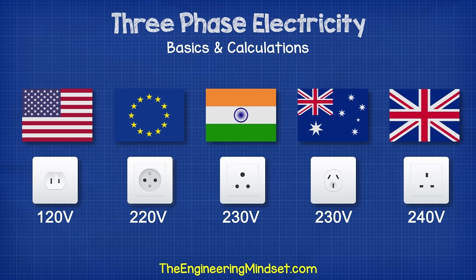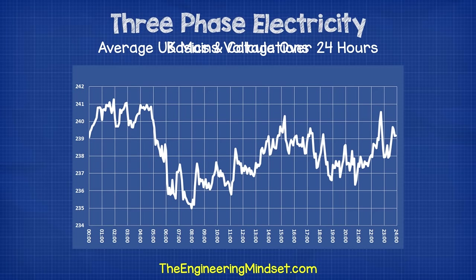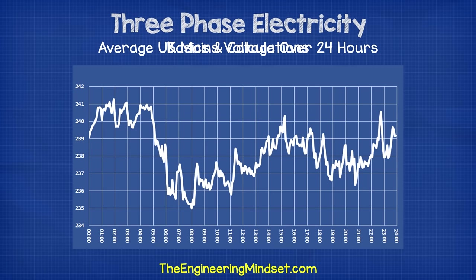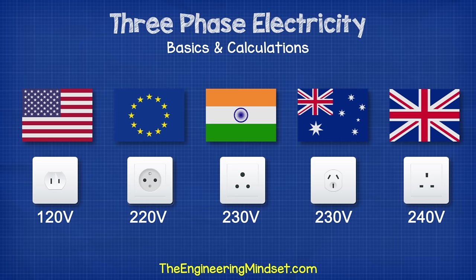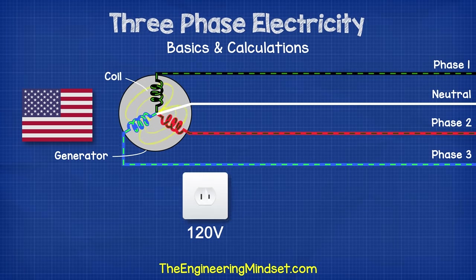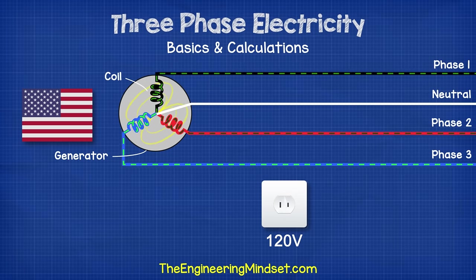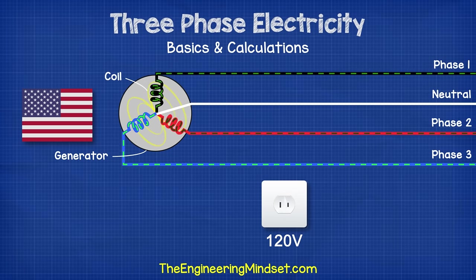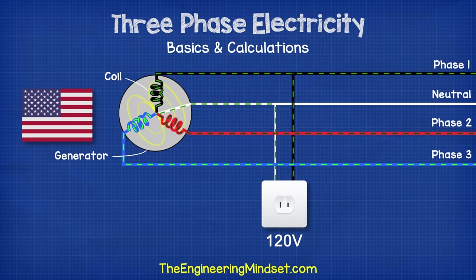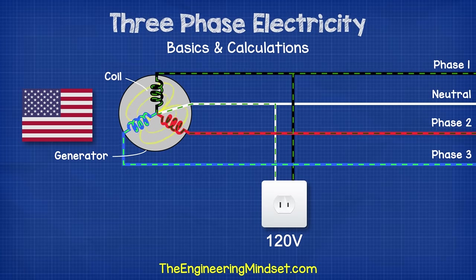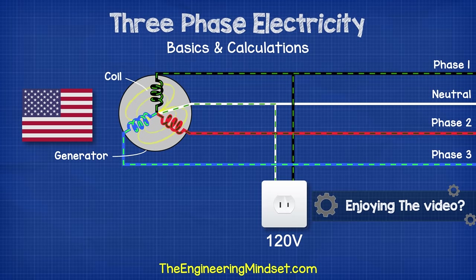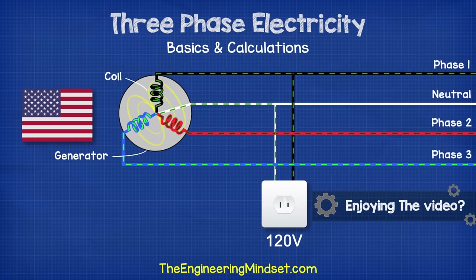The voltages at our sockets do vary throughout the day. I've logged the average voltage every five minutes for 24 hours and it varied between 235 volts and 241 volts. These voltages at the sockets are single phase — from a wire connection from either a generator or a transformer. They come from connecting between a single phase and the neutral line, or in other words, just one coil of the generator.